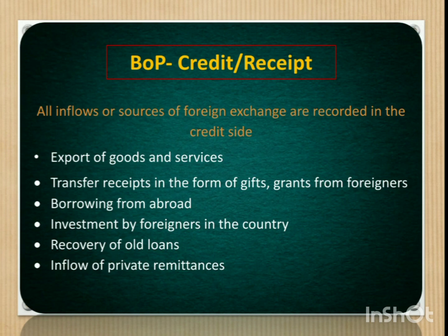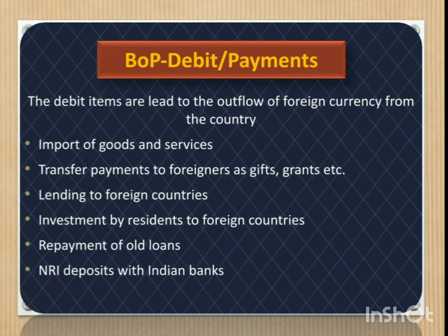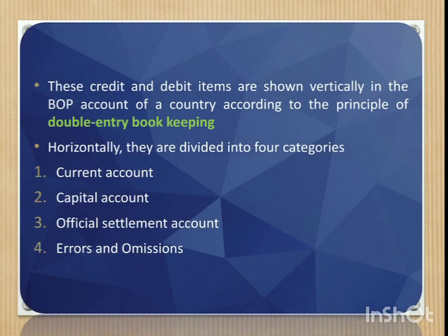The major items shown on the credit side are: export of goods and services, transfer receipts in the form of gifts and grants from foreigners, borrowing from abroad, investment by foreigners in the country, recovery of old loans, and inflow of private remittances. On the debit side, the major items include: import of goods and services, transfer payments to foreigners as gifts and grants, lending to foreign countries, investment by residents to foreign countries, repayment of old loans, and NRI deposits with Indian banks. These credit and debit items are shown vertically in the balance of payment account of a country.